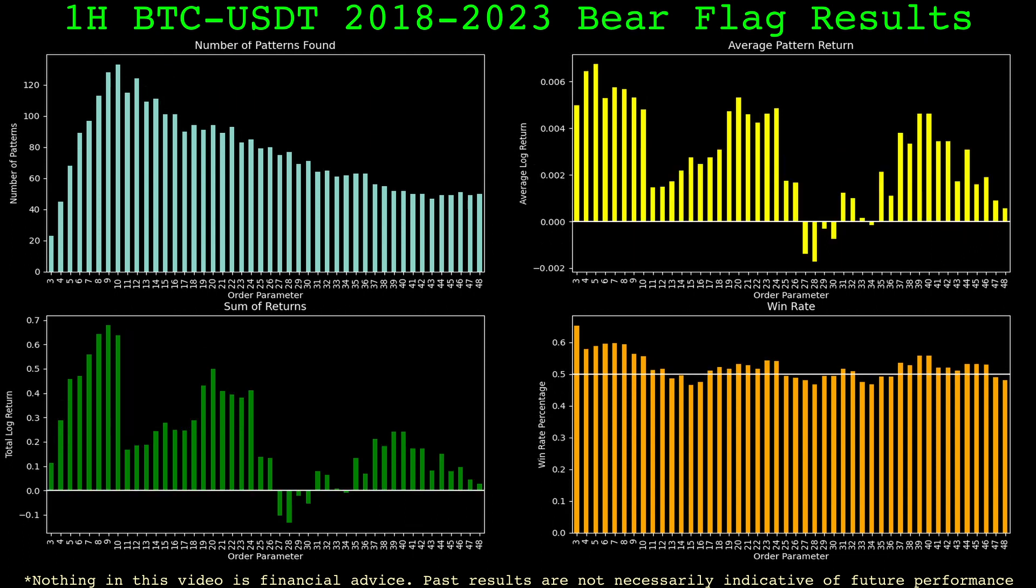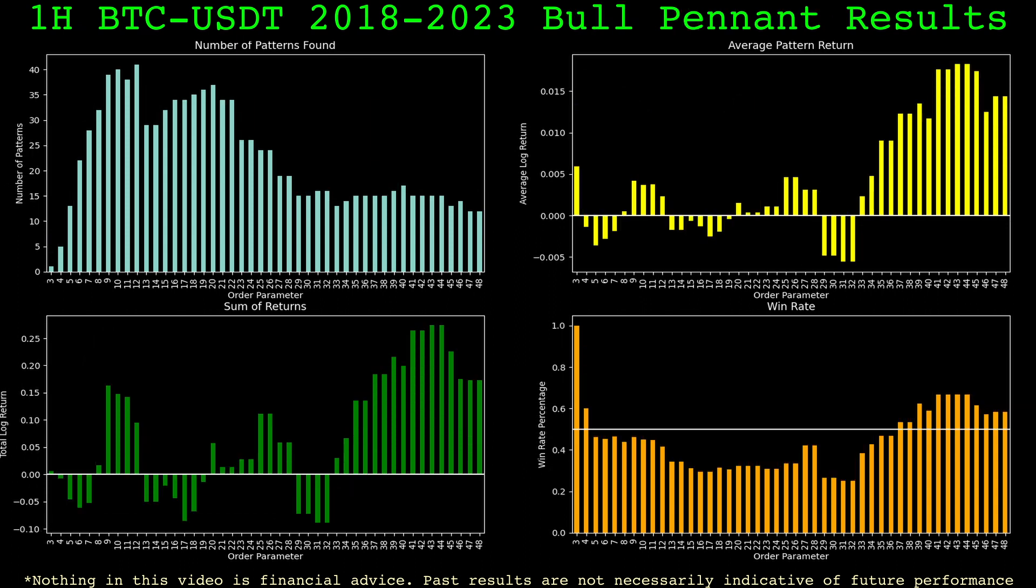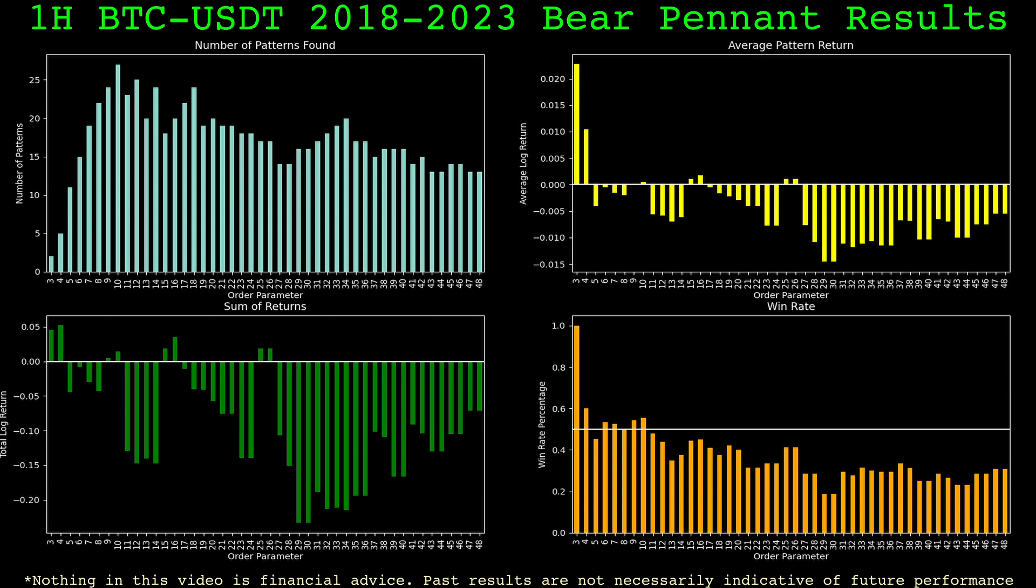Here are the bear flag results. Everything is the same except the returns are multiplied by negative one. This is to simulate a short position. We can see that again the lower parameter values are fairly good, but the higher parameter values are decent as well, with only a few parameter values losing overall. The pennants however did not do as well. This is the bull pennant data. They are found much less frequently than the flags, and their performance is pretty inconsistent, except at the higher values of the order parameter. And finally here are the bear pennant results, which did not do well at all. In fact it is so bad it may be good as a long entry. Overall it seems the flags worked better than the pennants, at least on hourly bitcoin data.